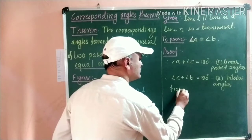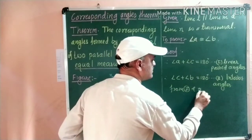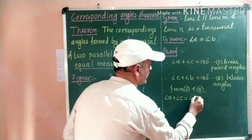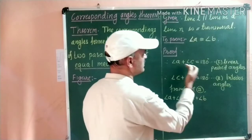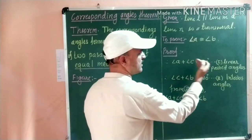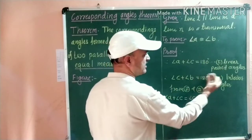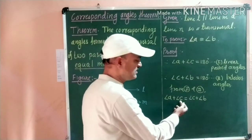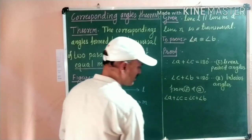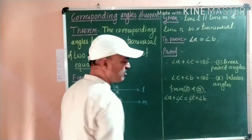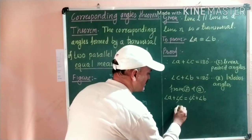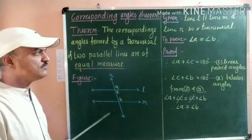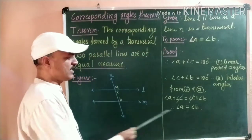From the first and second statements, we get: angle A plus angle C is equal to angle C plus angle B, because the right-hand side of both equations is 180 degrees, so both left-hand sides are equal. Here, angle C appears on both sides and cancels out. What remains is: angle A is equal to angle B. In this way, we prove that the corresponding angles are of equal measure.